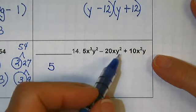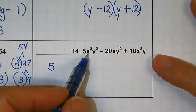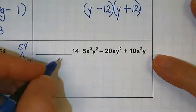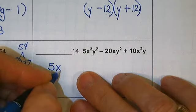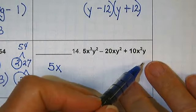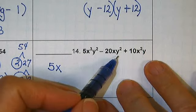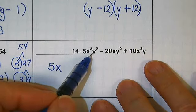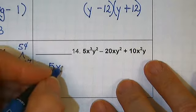We have an x, an x, and an x. So we can pull out the x. And we have a y and a y and a y. So we can pull out a y.